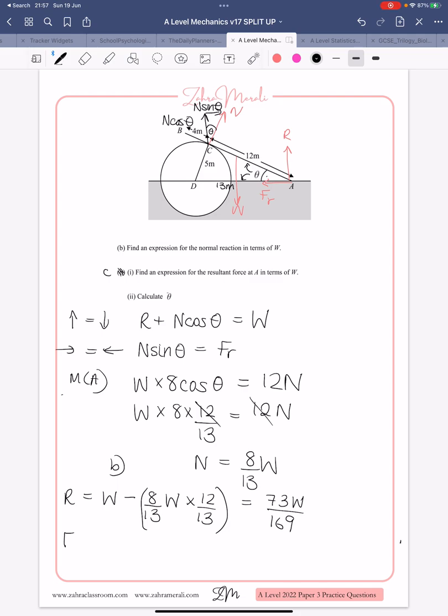And then we want an expression for friction, which is N, which is 8 over 13W, times sin theta, which is 5 over 13, and that's because sin is opposite over hypotenuse. And that gives us 40W over 169.